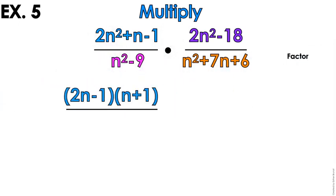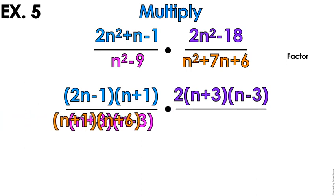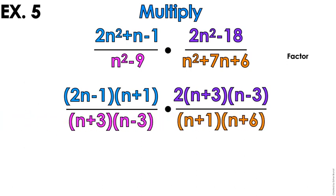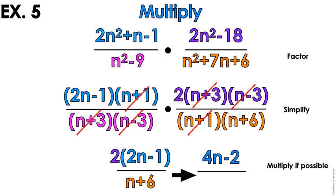Now that you have everything nice and factored, then you're going to replace the problems with the factored form. Now let's check to see if anything simplifies. n plus 1, n plus 1, n plus 3, n plus 3, n minus 3, n minus 3. Get out of here. What's left on top is a 2 and then 2n minus 1. On the bottom is n plus 6. Multiply if possible because you want your answer all nice and neat and tidy. And ta-da!